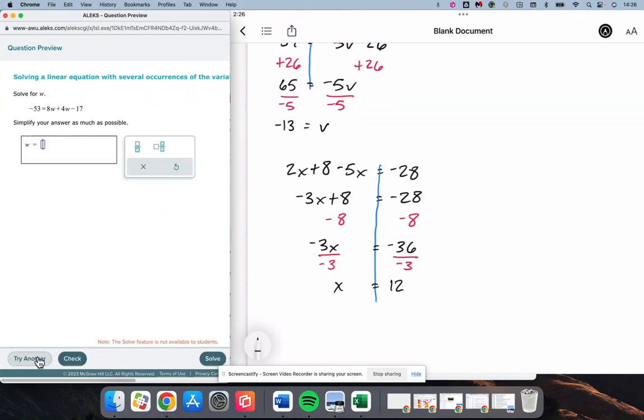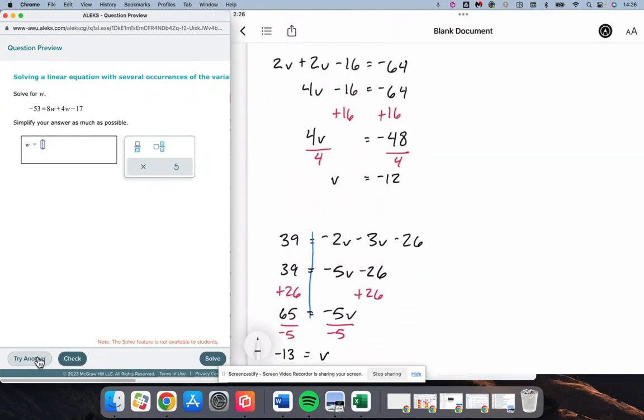And we get x is equal to negative divided by negative makes a positive 12. All right. We'll do one more. We get negative 53 is equal to 8w plus 4w minus 17. And so we can see that on the right we can combine the w's.